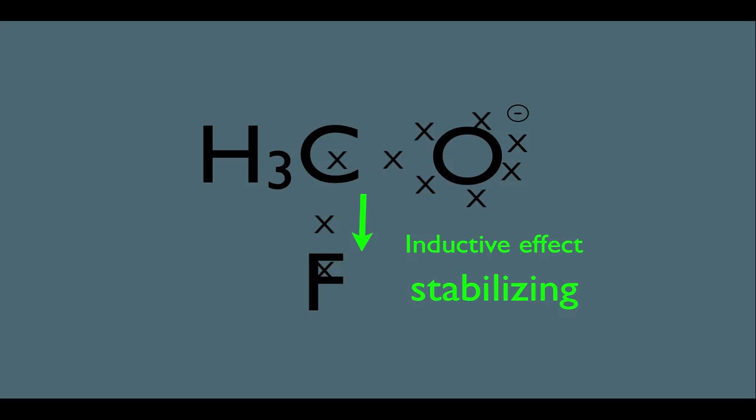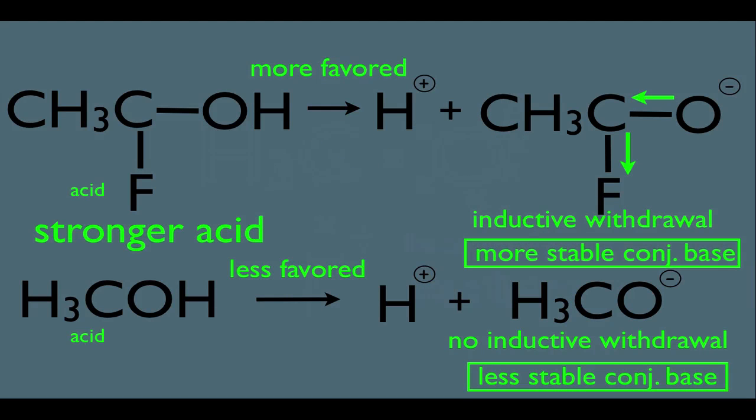Think about why this is stabilizing. If we can get electrons to move further apart from each other, that is lower energy and more stabilizing — electrons are negatively charged and don't like to be close to each other; they'd rather be spread out. So if we can detect a stronger withdrawing inductive effect on an exam, that indicates a more stable conjugate base and therefore a stronger acid.